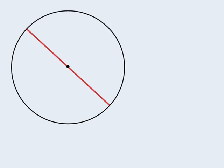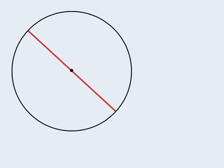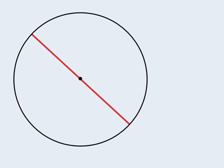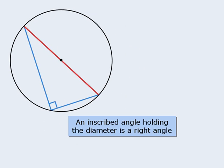The next property involves a very special chord that passes through the center of a circle. This chord is known as the diameter. If we have an inscribed angle holding the diameter, then that inscribed angle must equal 90 degrees. So we can say that an inscribed angle holding the diameter is a right angle.